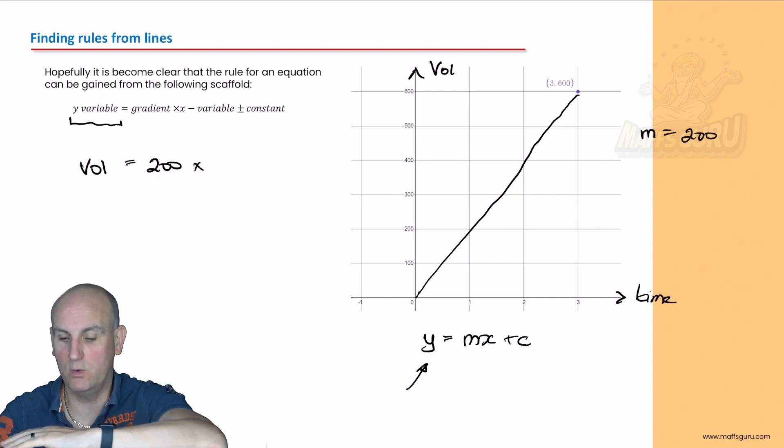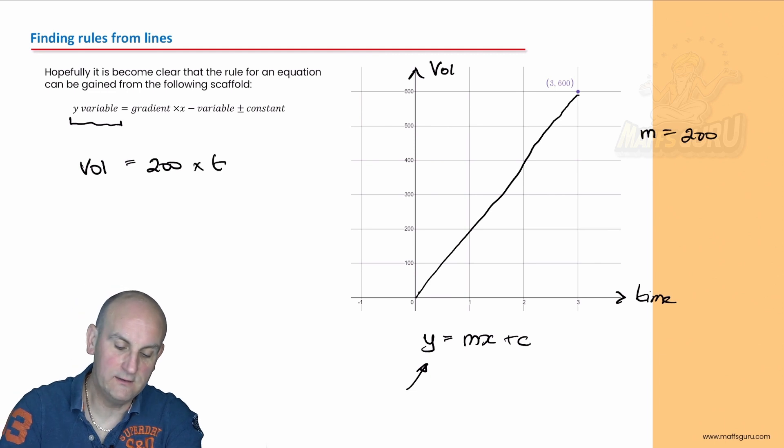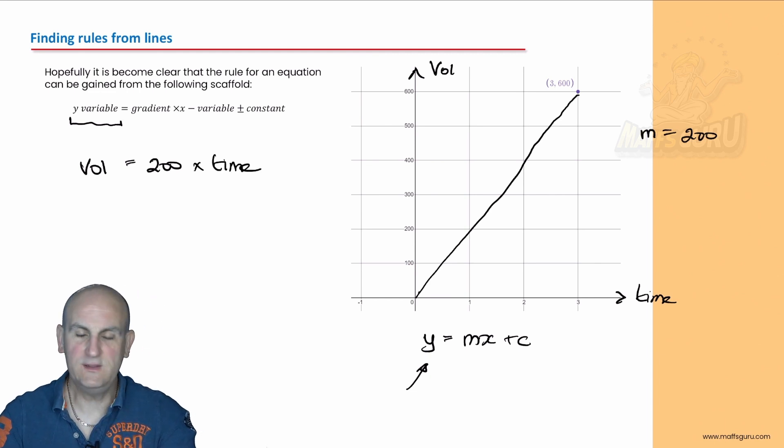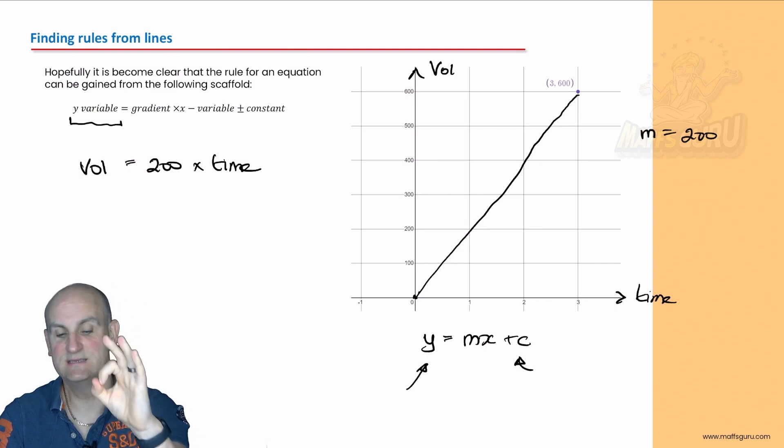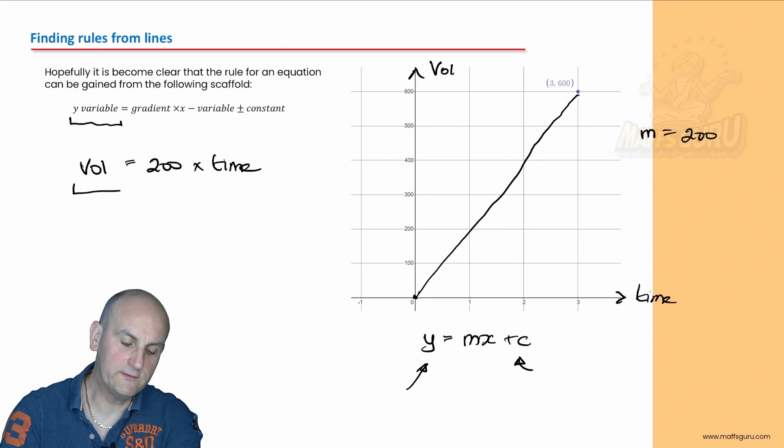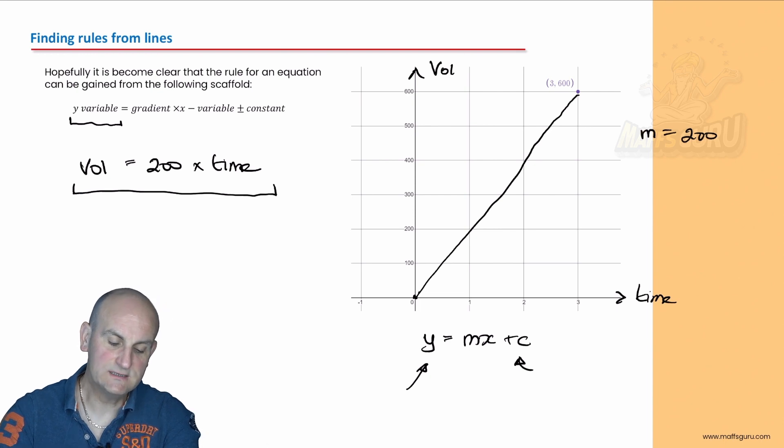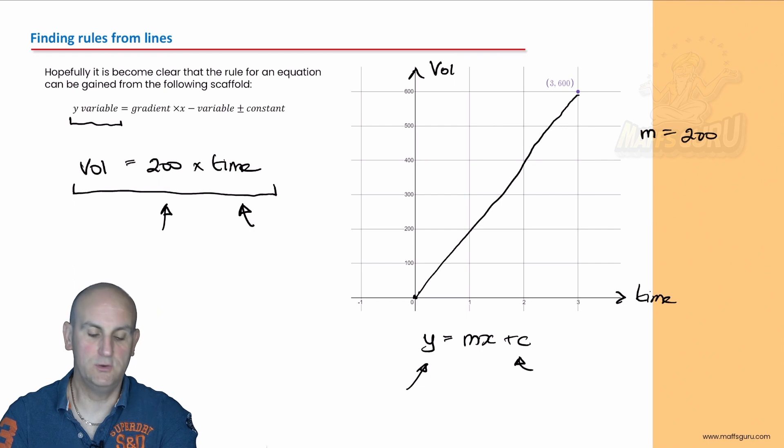So the volume is equal to the gradient, we work that out, that's just a number, 200 times the x variable. What have you written on the x axis? Not the letter x. Have you written a word? Absolutely. So there it is, time. And then we do this plus or minus constant. Now, that plus or minus constant is actually the y axis intercept. And generally speaking, for direct proportion questions, that is going to be zero. So I've now worked out my formula.